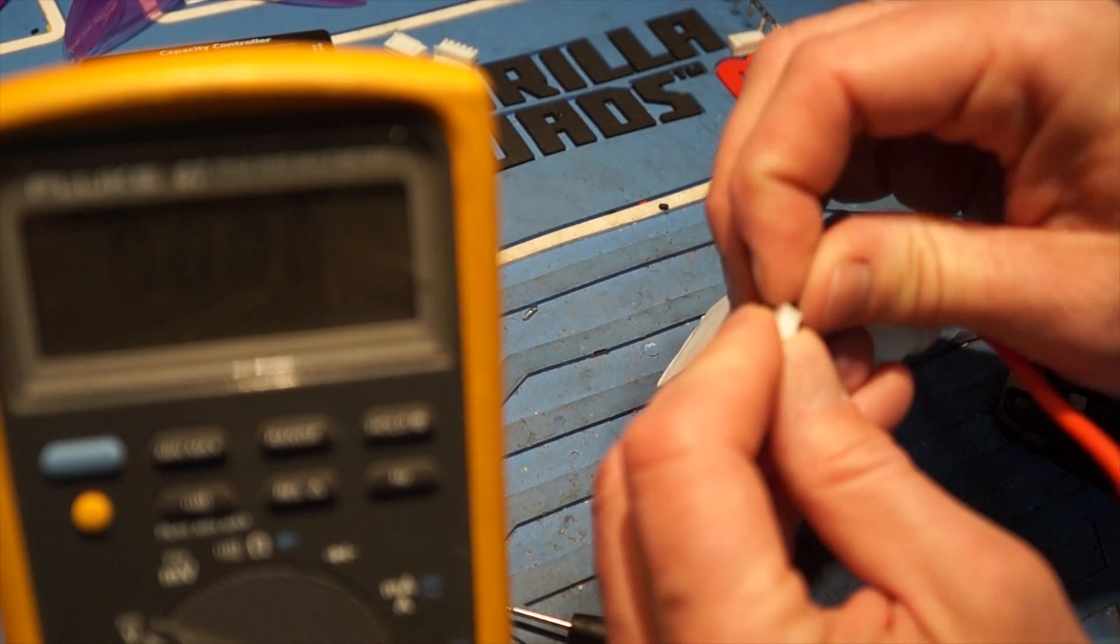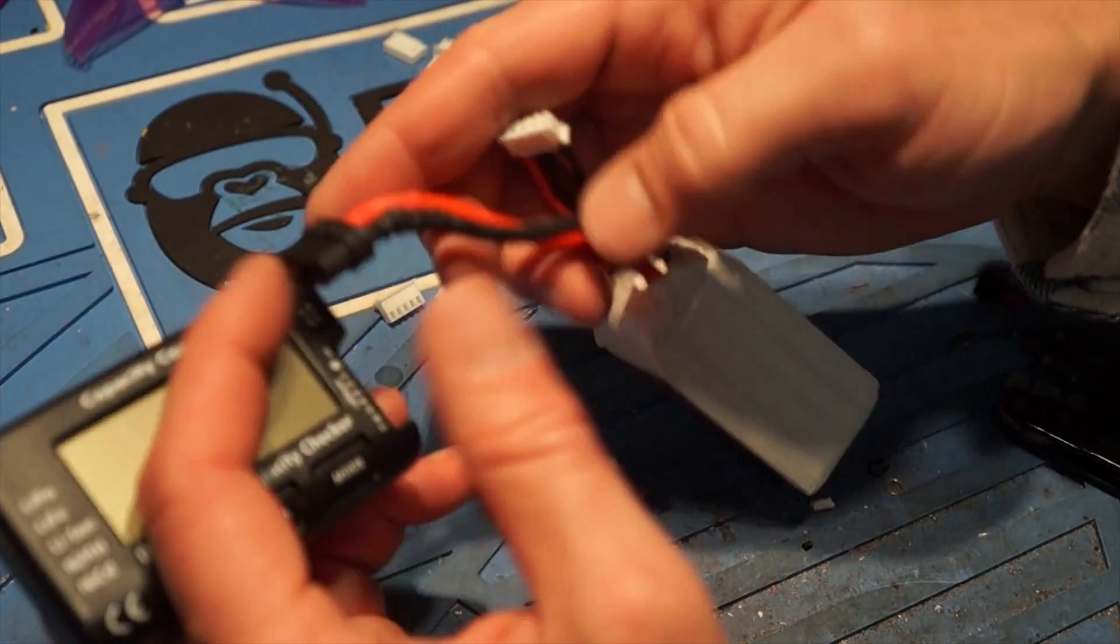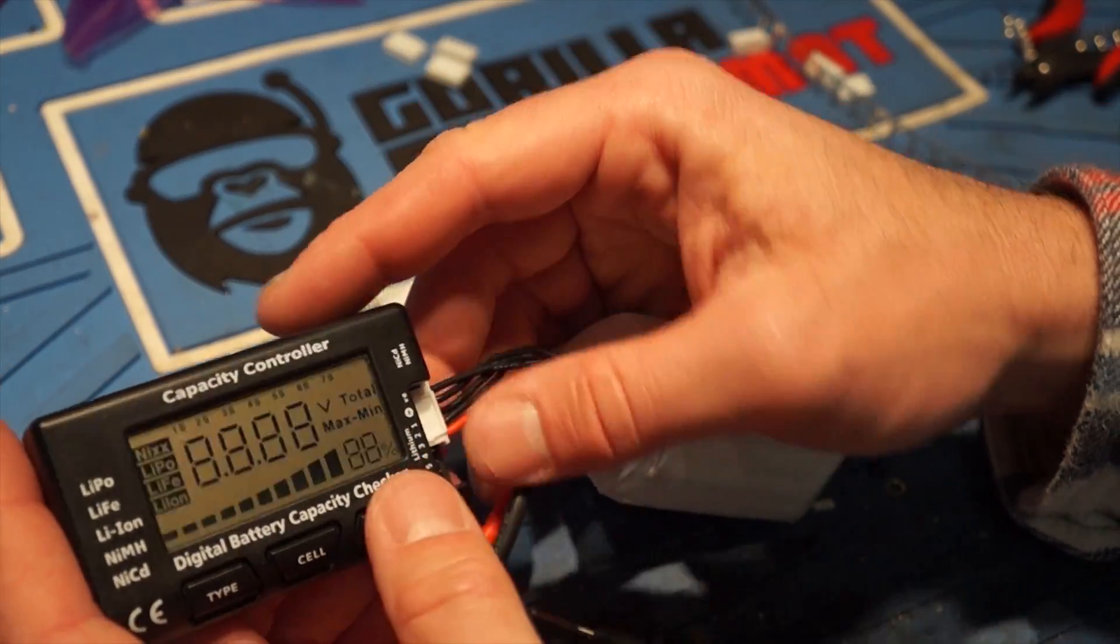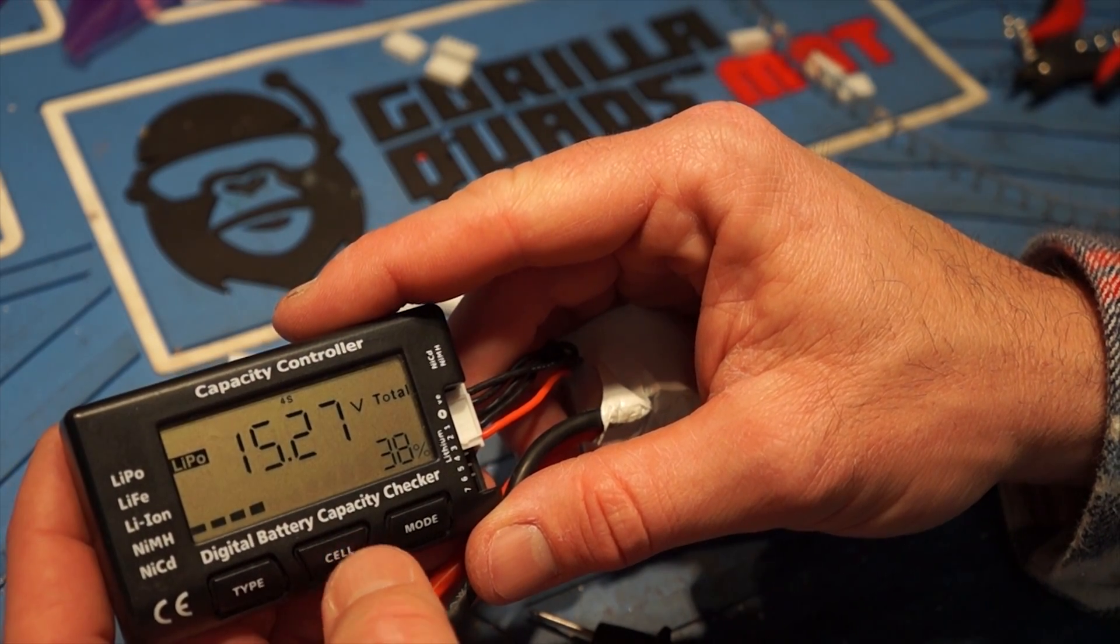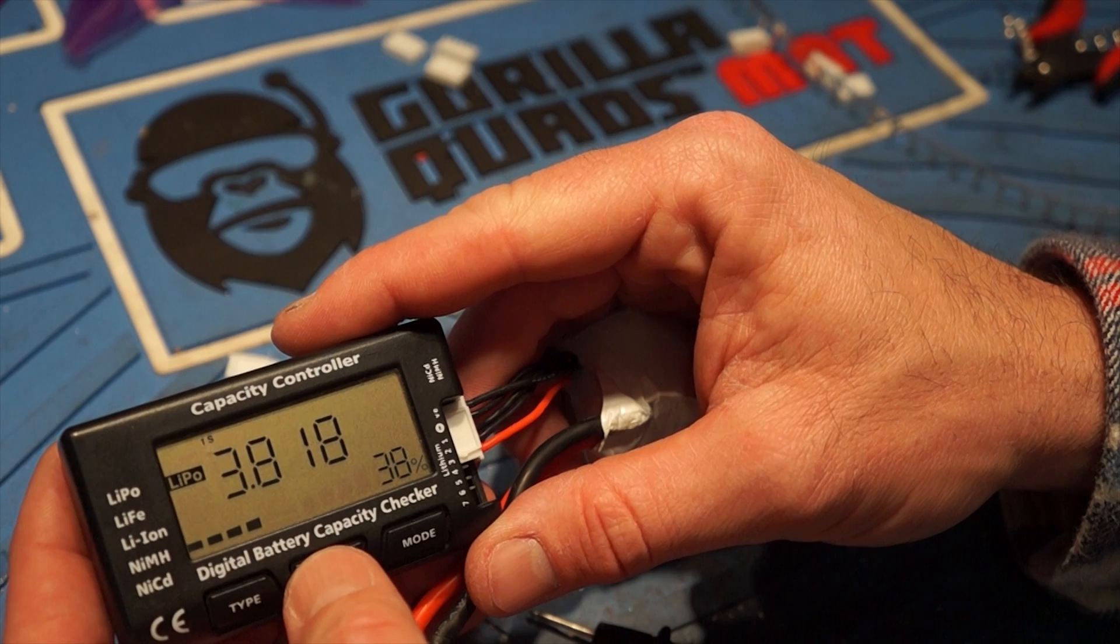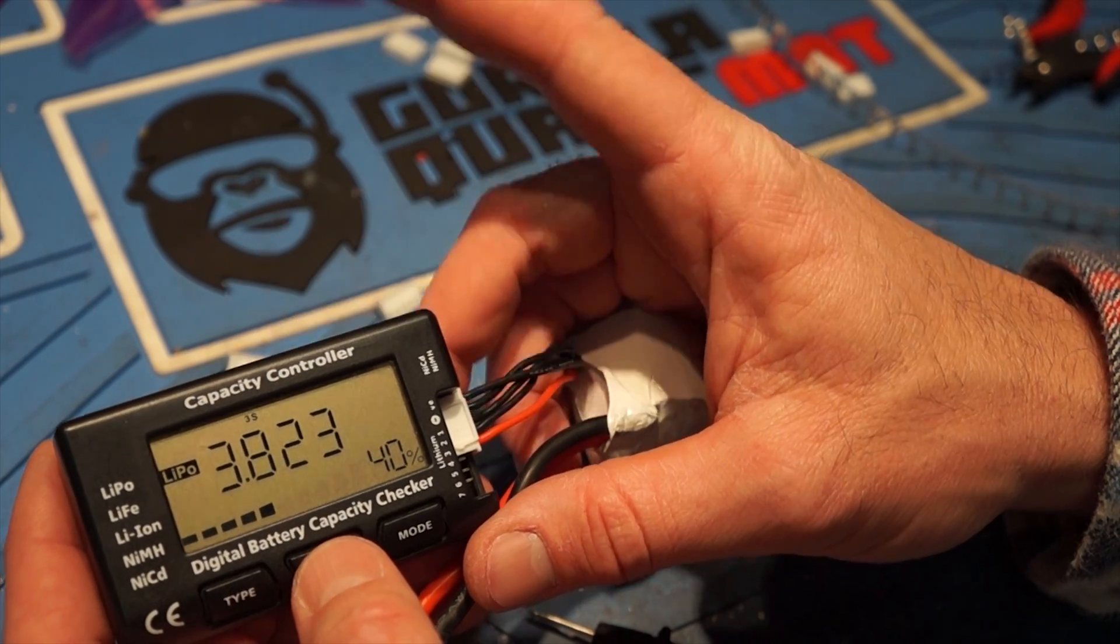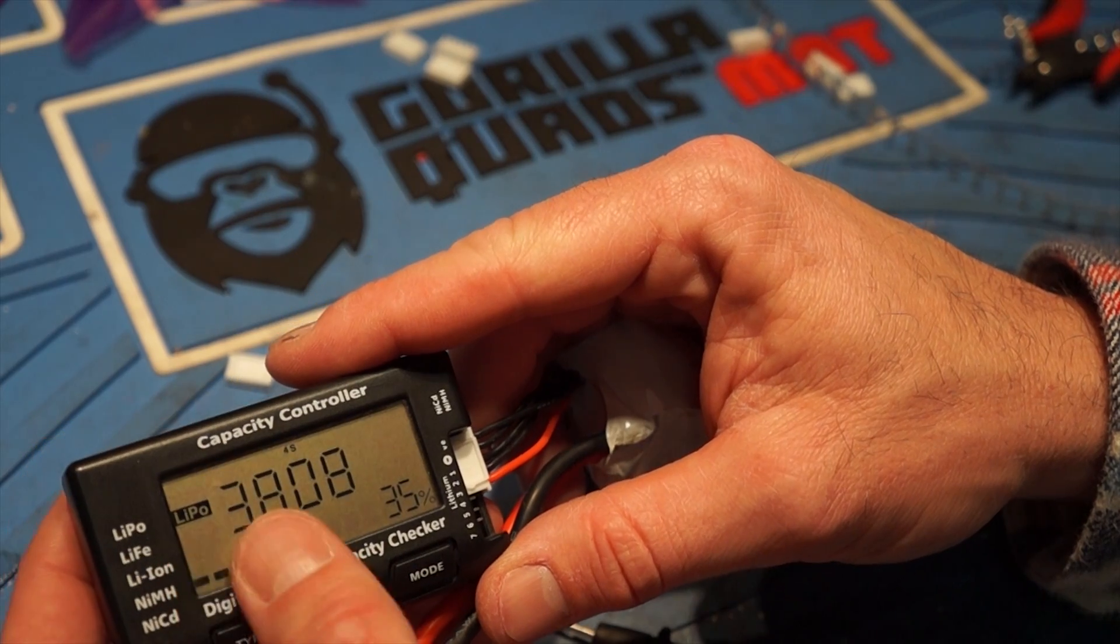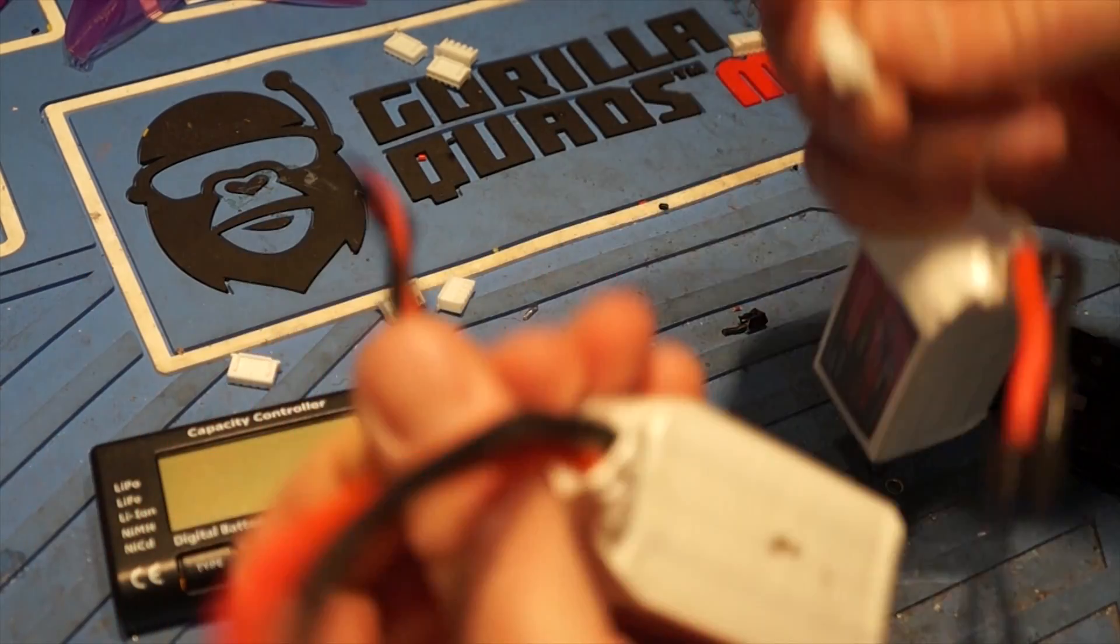So let's see what we got on our lipo tester here. This should read all correctly. We have a total voltage of 15.27, first cell 3.81, second cell 3.81, third cell 3.82, and last cell 3.80.